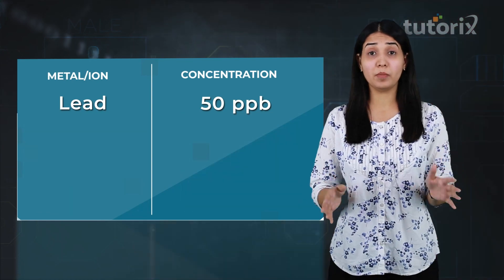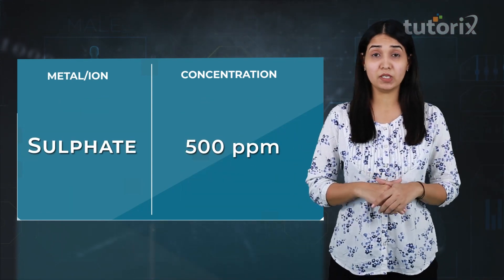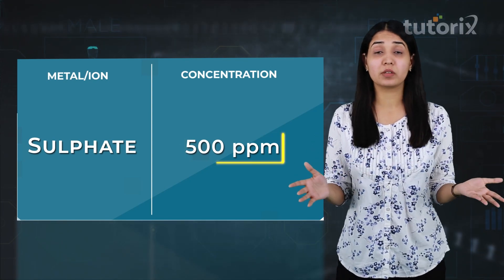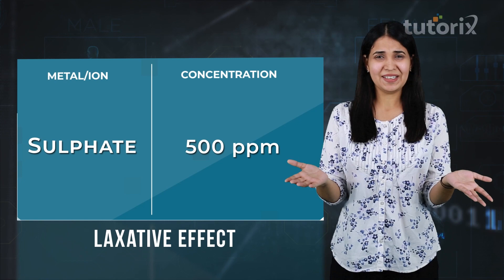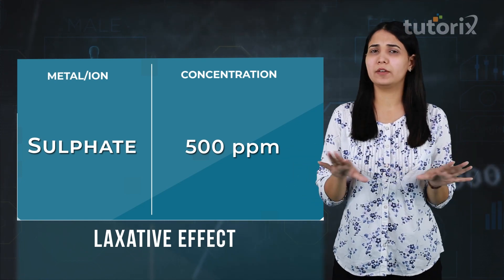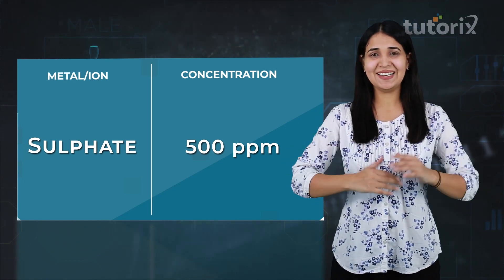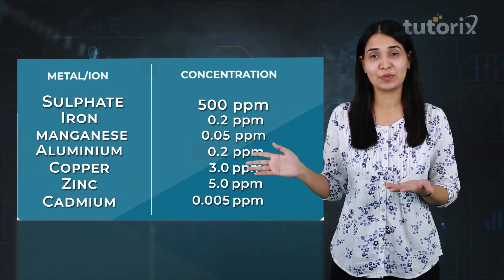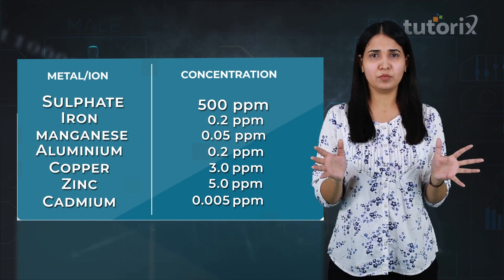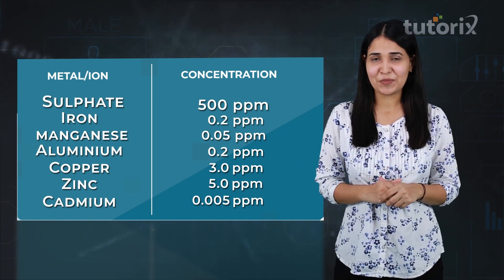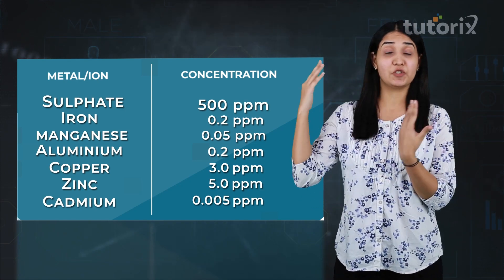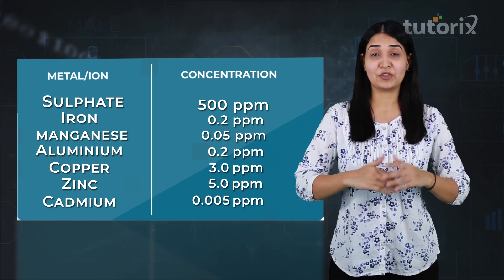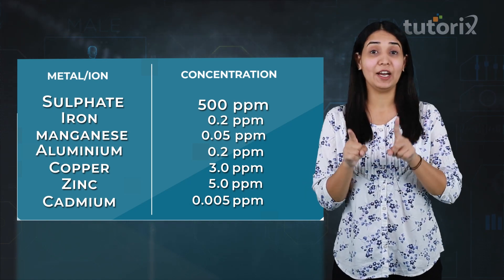If I talk about sulphate — the excessive sulphate limit, which is beyond 500 ppm, if present in water, can cause laxative effects. But it is harmless at moderate levels. Similarly, you can take a look at iron, manganese, copper, and aluminium and the values written for them. Next time when you are drinking water, it is very important that you take a look at the concentration of all these metals or ions, so that you know whether the water you are drinking is safe for you and your family.